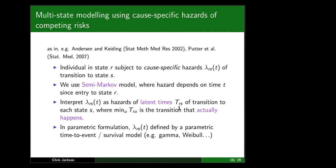This is slightly controversial because it's a counterfactual quantity — only one of these times will happen to any person. We can conceptualize the minimum of these latent times as the transition that actually happens. The cause-specific hazards λ can be interpreted as hazard functions defining the latent times of each event. You don't need to invoke this idea of latent time to construct the likelihood — there's a proof paper by Prentice from 1978 — but it makes it easier to think about how models are implemented in software.